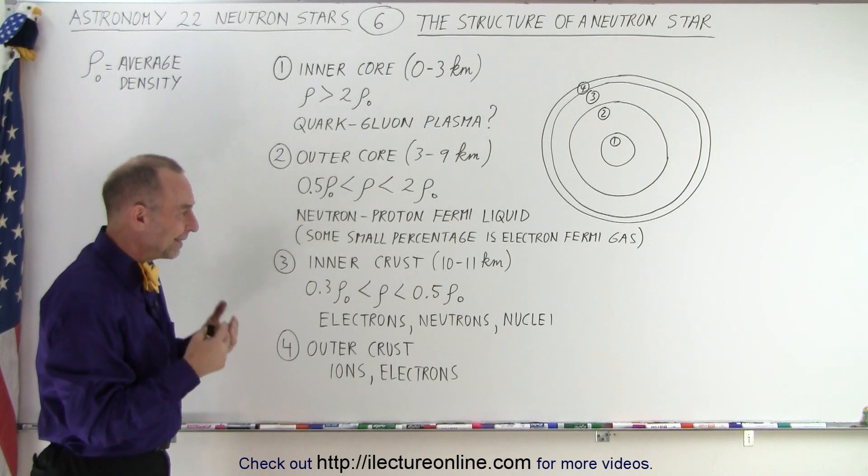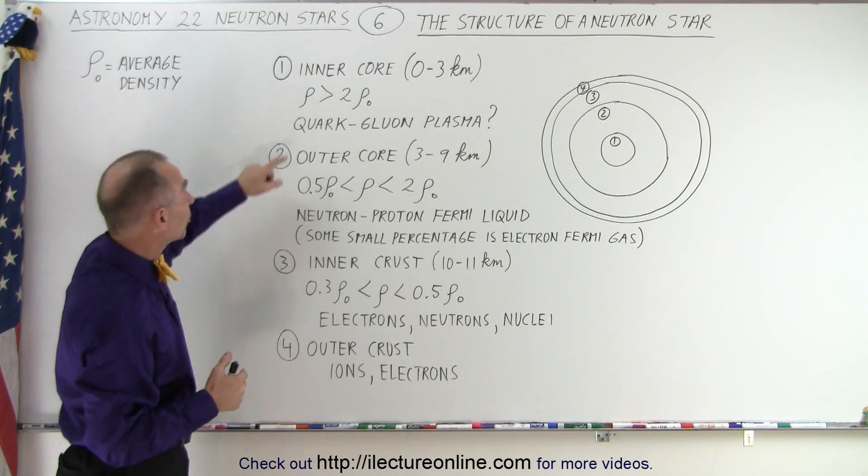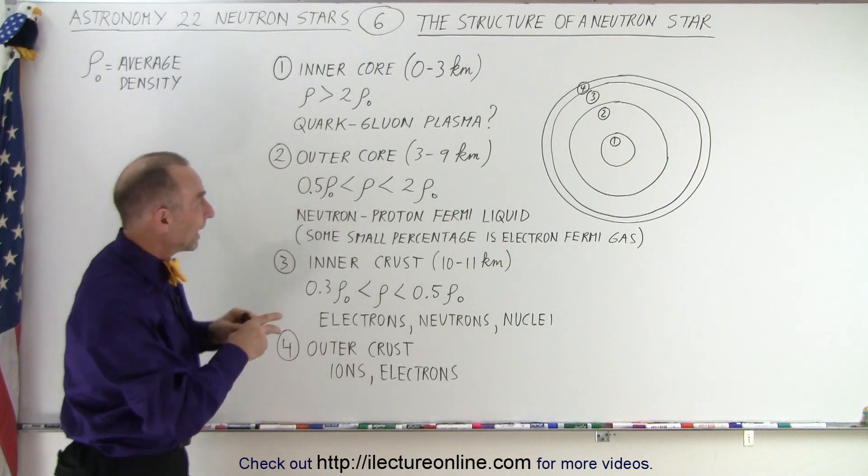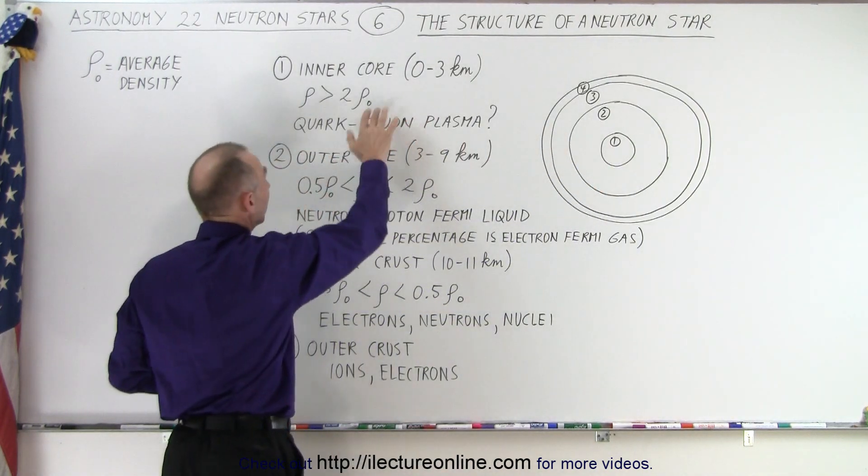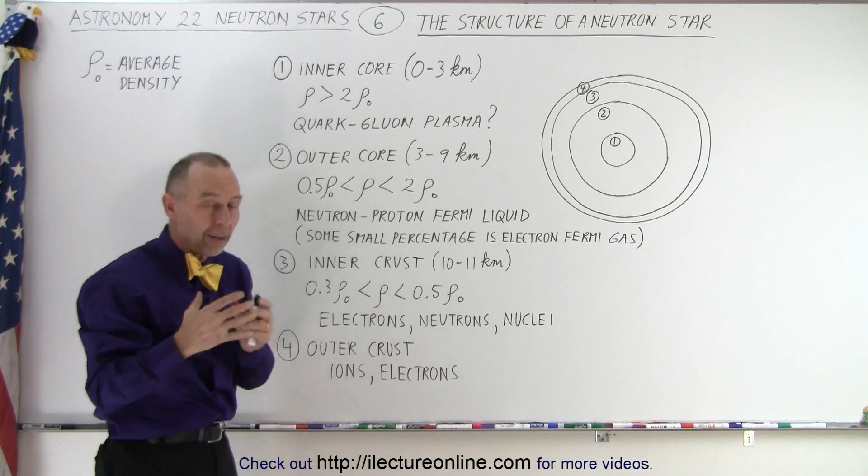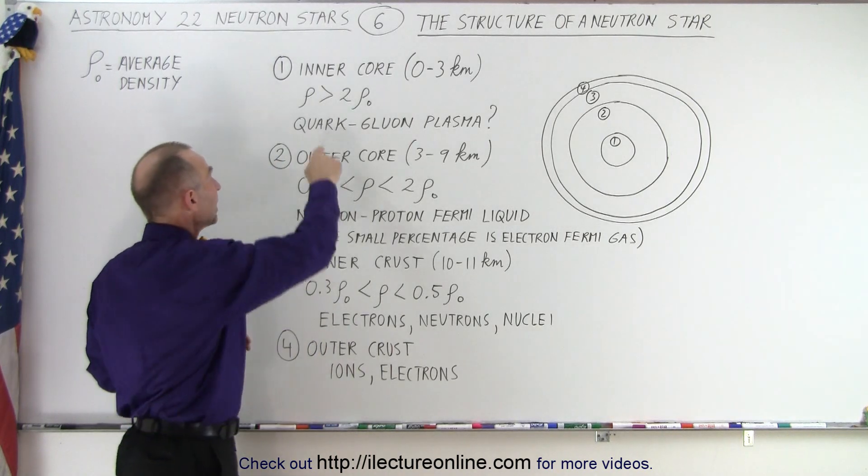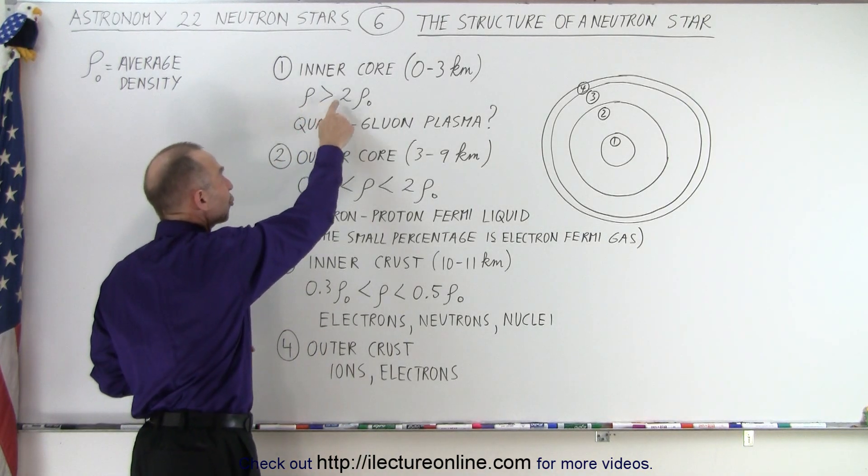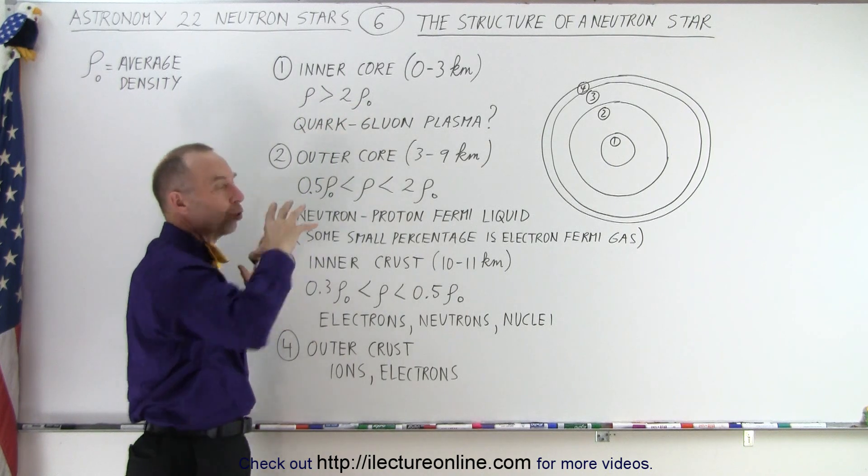So, that means that the density at the center, which is, we're up here at the inner, they call that the inner core, the region right here, let's call the inner core, to a distance of about three kilometers away from the center, where the density is greater than twice the average density of the whole neutron star.